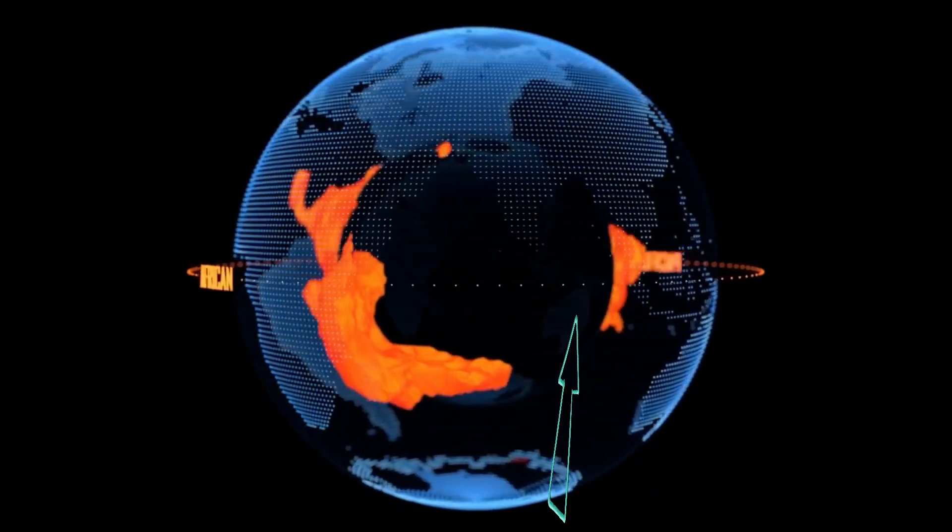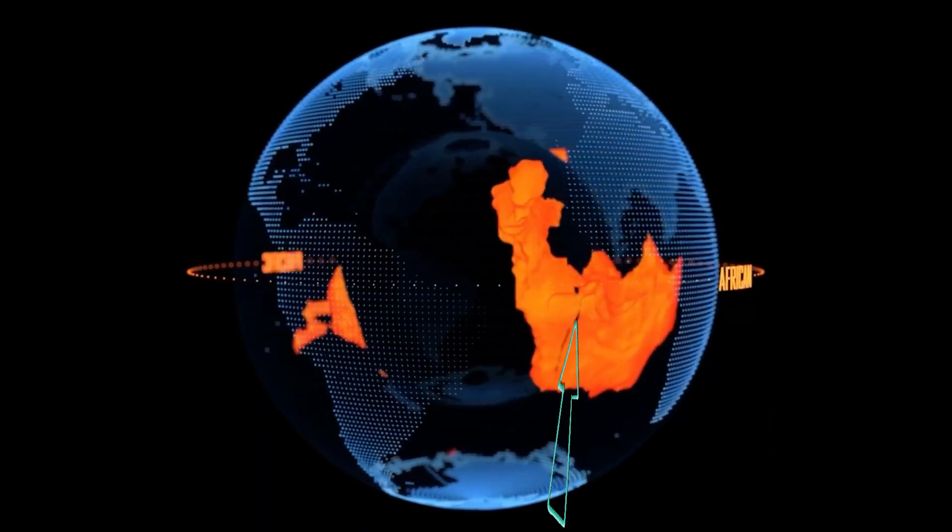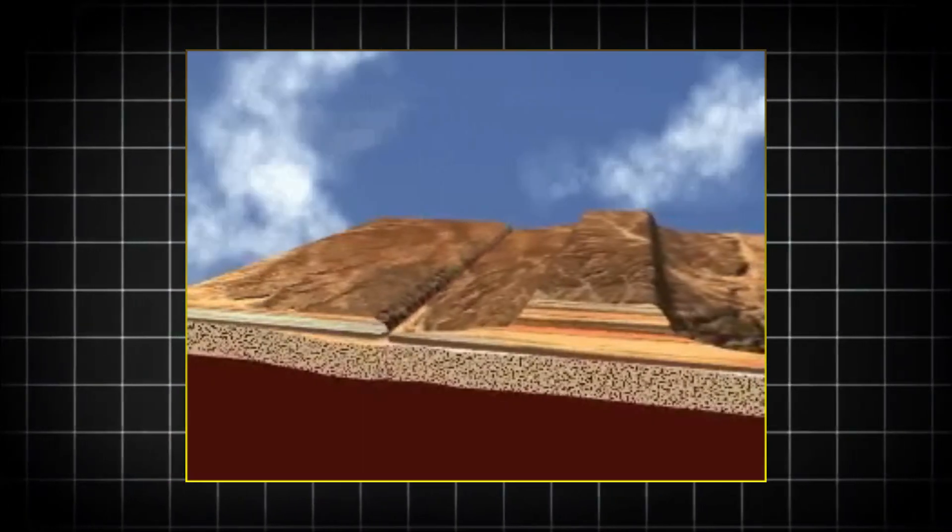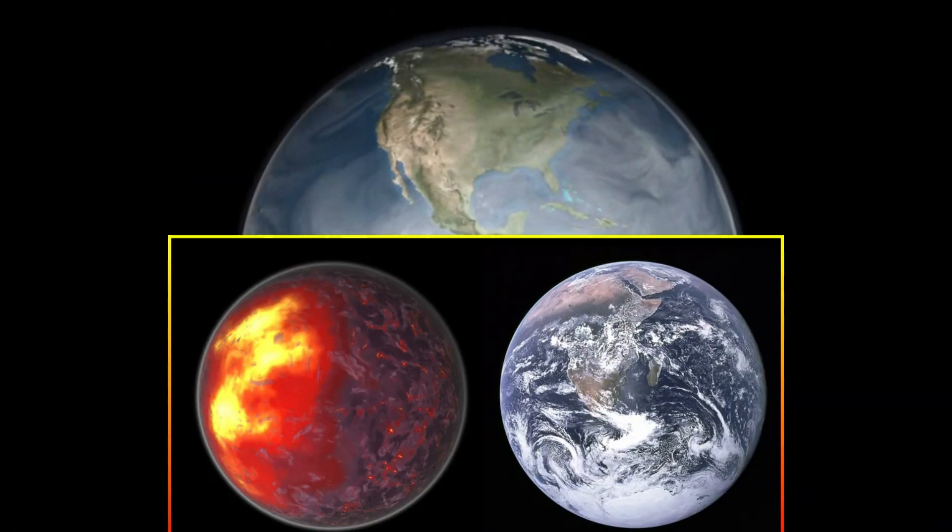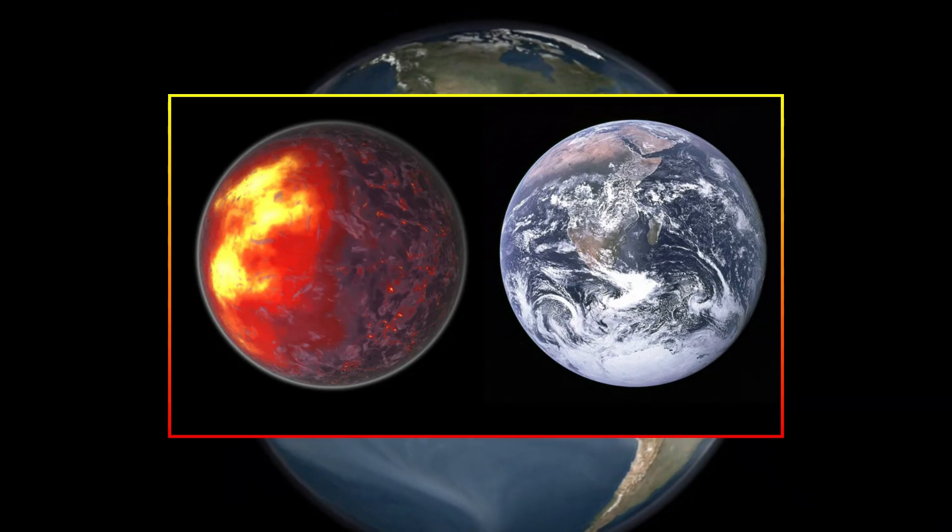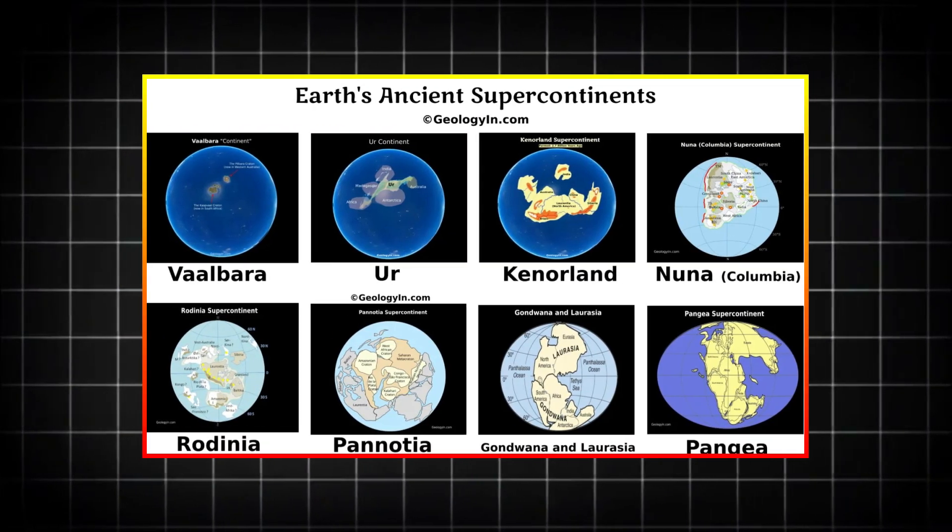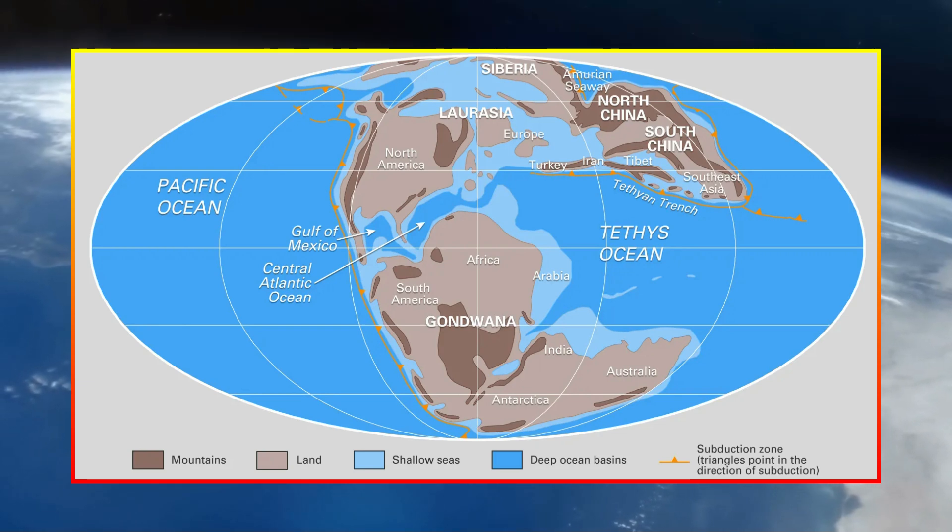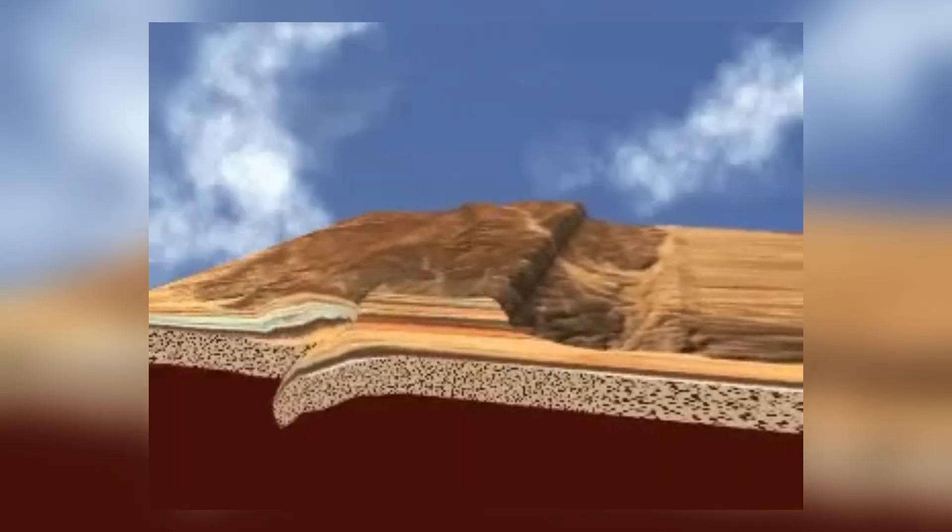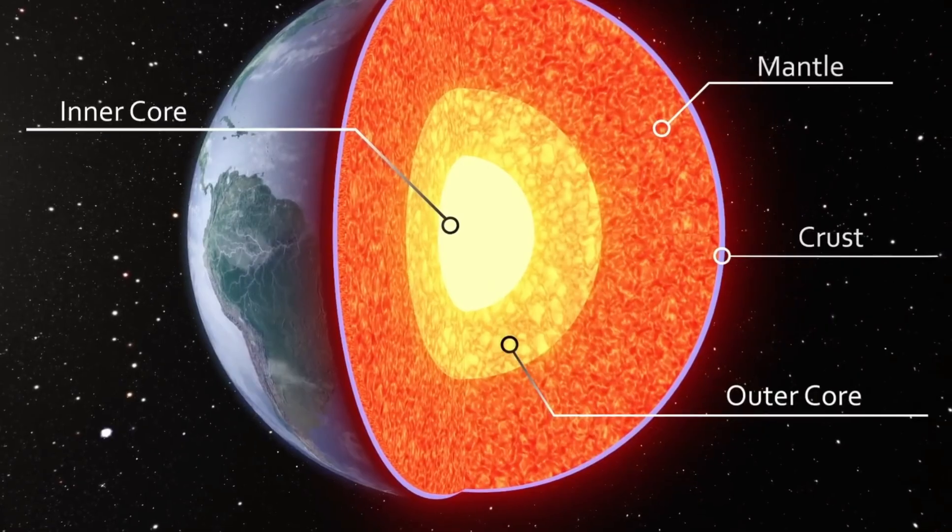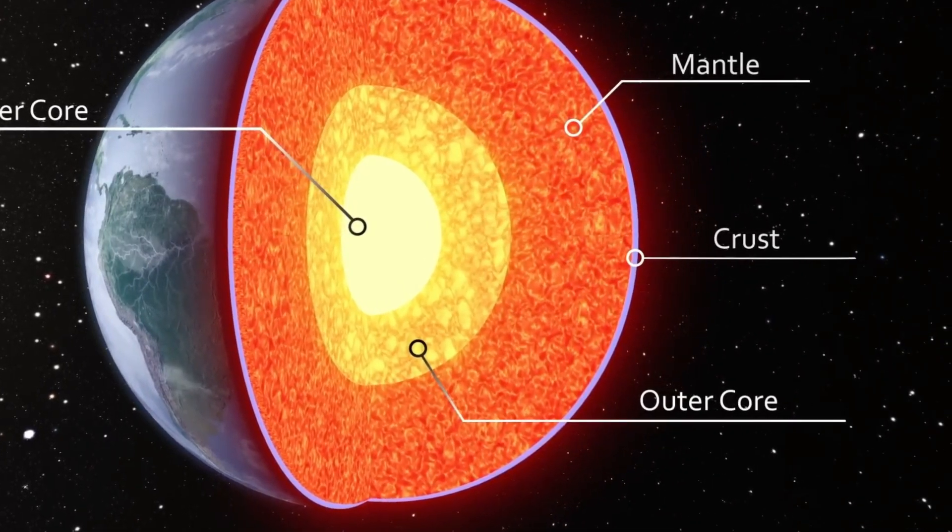In fact, some geophysicists believe that these dense, iron-rich structures may be responsible for influencing mantle convection, the process that drives plate tectonics. This could have a profound impact on our understanding of Earth's early history, including the formation of supercontinents. Could these anomalies be remnants of ancient landmasses, preserved for billions of years? Or are they the result of ongoing dynamic processes within the mantle?